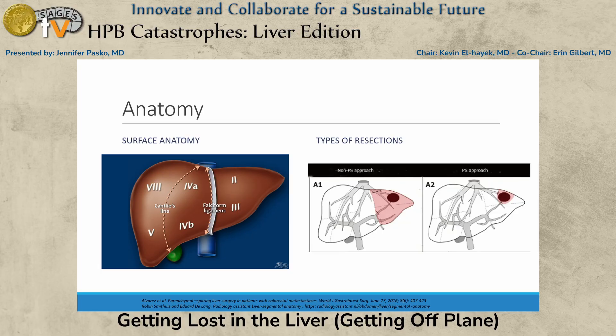It's the deep anatomy that's very difficult to predict. Standard rights, lefts, and left laterals are much easier than parenchymal sparing resections. The problem is we alter the surface anatomy as we go, and that becomes very confusing.